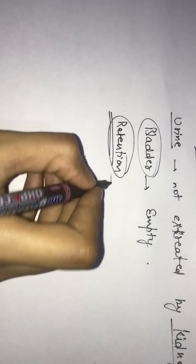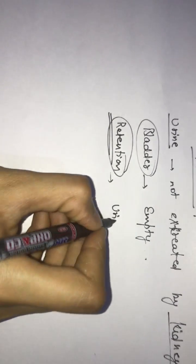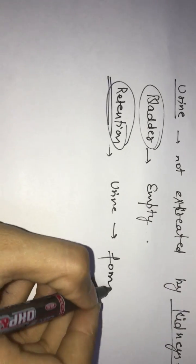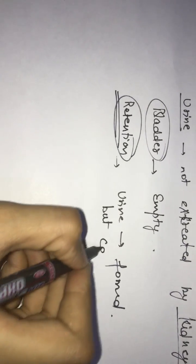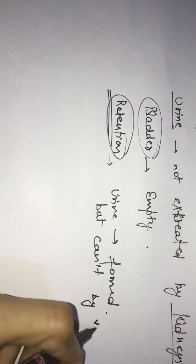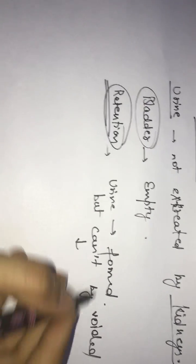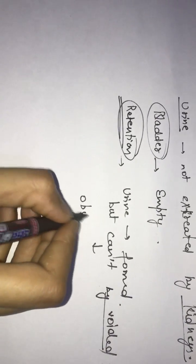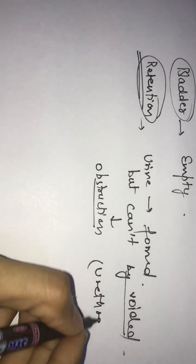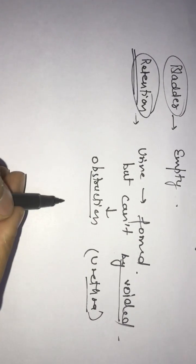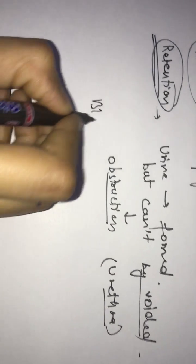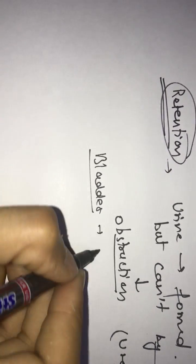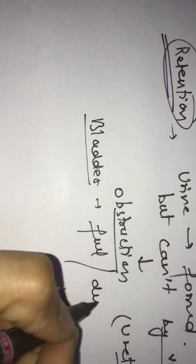One term is retention. Retention is quite different from anuria. Why? Retention means that urine is formed, but it cannot be voided. Why is this happening? Because of any obstruction — where? In the urethra. In some obstruction, urine cannot be voided. If we look at retention, the bladder is full and distended.